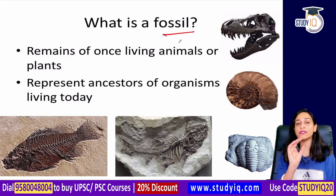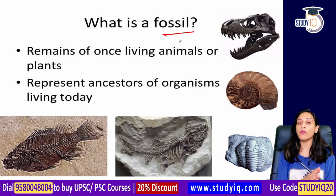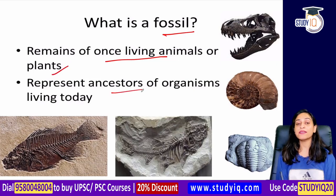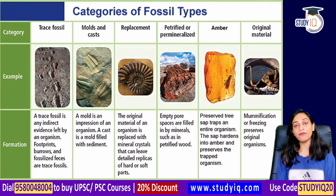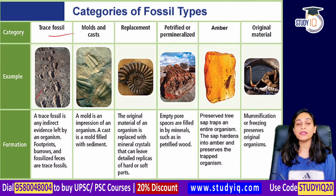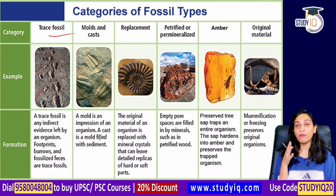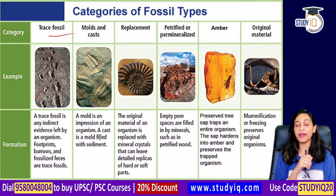What is a fossil? Fossils are the remains of once-living animals or plants — they represent our ancestor organisms. There are different types: trace fossils provide indirect evidence, such as footprints left by organisms, burrows, or fossilized feces and waste material.